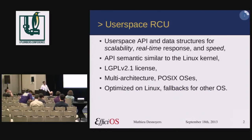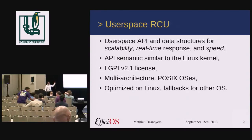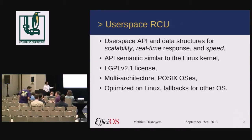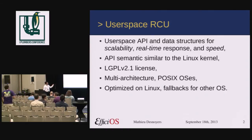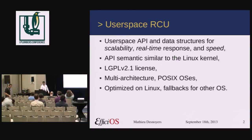A bit of context. UserSpace RCU and data structures are really targeting scalability, real-time response, and speed at the user space level. They provide an API semantic similar to that of the Linux kernel. It's provided under LGPL 2.1 license. It supports multiple architectures, mainly POSIX operating systems. It's optimized for Linux, and it provides fallbacks for other operating systems.